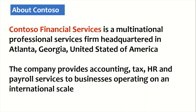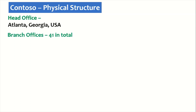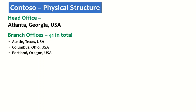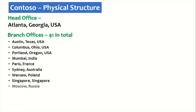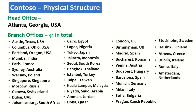It has branch offices across the globe. Let us see the physical structure of Contoso. The head office is in Atlanta, Georgia, and they hold 41 branch offices in Austin Texas, Columbus Ohio, Portland Oregon — three offices in the USA — with additional offices in Mumbai, Paris, Sydney, Warsaw Poland, Singapore, Moscow, Geneva, Dubai, Johannesburg, and so on. They have 41 total branch offices across the globe.